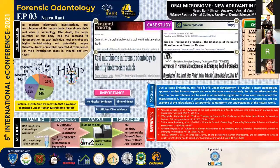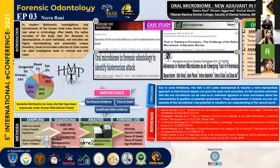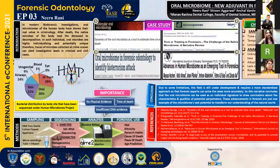Now we see the methods behind this process. First, the microbial sample is collected from the crime scene through a DNA-free sterile cotton-tip applicator and placed immediately into a micro-centrifuge tube containing ethanol. Then sequencing of the microbial DNA occurs. In 16S rRNA sequencing, the 16S rRNA gene is coded, whereas in shotgun metagenomic sequencing, the whole bacterial microbial genome is coded.